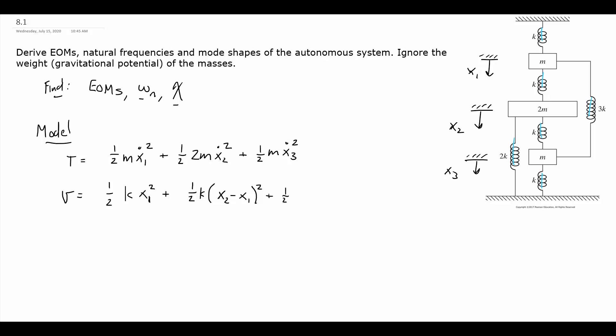The third k spring connects 2m and the bottom m. If x2 is held constant, positive x3 puts it in tension; if x3 is zero, negative x2 puts it in tension. So that term is one-half k times (x3 minus x2) squared. The fourth spring connects x3 to the floor, which doesn't move, so that's simply one-half k times x3 squared.